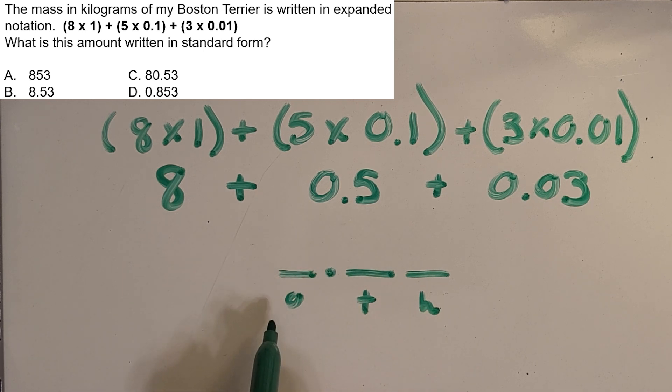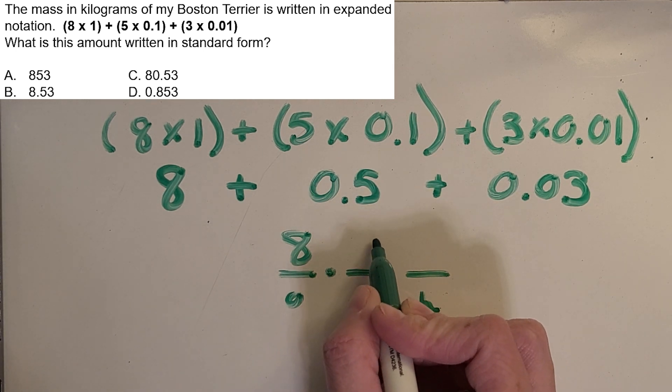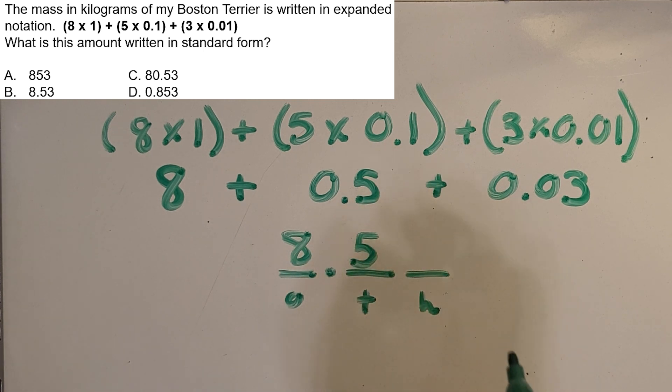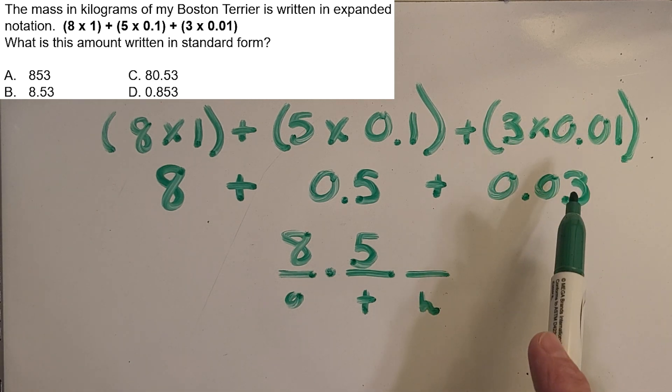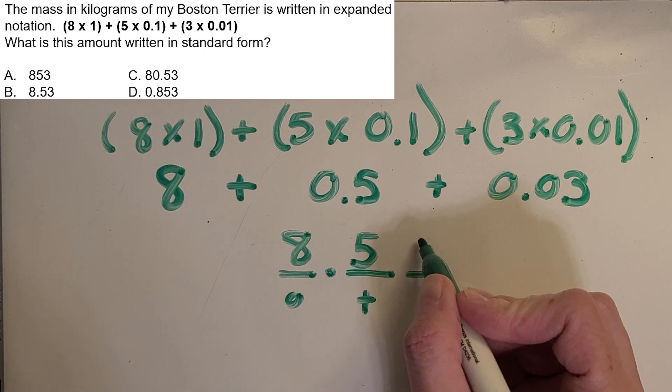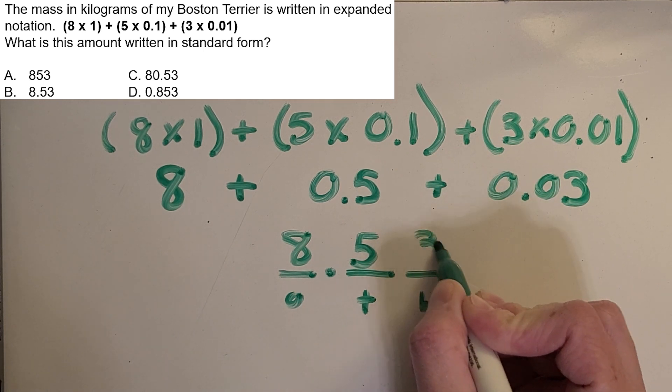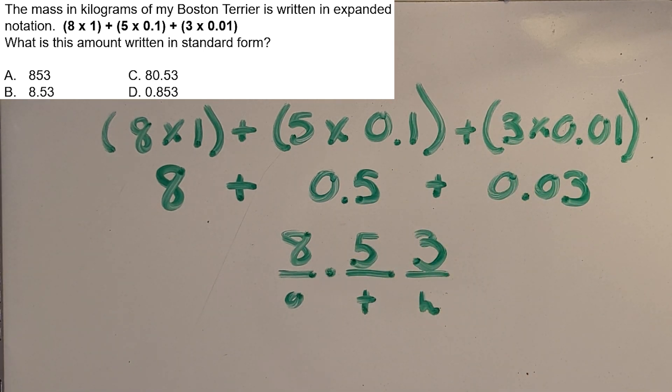What digit goes in the ones? Okay, awesome. That eight. What digit should go in my tenths place? Yep, you got it. That five. And then what digit should go in my hundredths place? Okay, awesome. This was one-hundredths, so the three should go in the hundredths place.